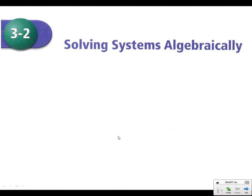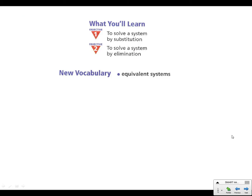All right, let's take a look at 3-2. We're going to solve systems algebraically here. So last chapter we found the place where our two lines crossed. Now we're going to figure it out without having to graph it. A couple different ways to do it. Substitution is one way. Elimination is the other. And our vocab for this section is equivalent systems.